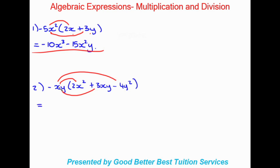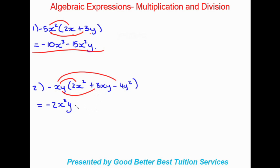So we have negative xy timesing 2x². There's an invisible 1 in front of x, so we get negative 1 times 2, giving negative 2. Then x times x — using laws of exponents, we add exponents when bases are the same, so 1 plus 2 gives x³ — and y stays as is. Now timesing into the next term: negative xy times positive 3xy gives negative 3, and x times x gives x², and y times y gives y².